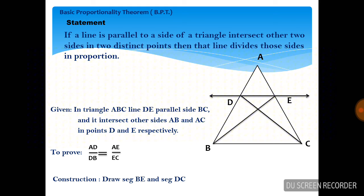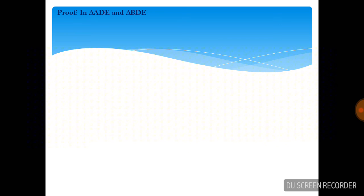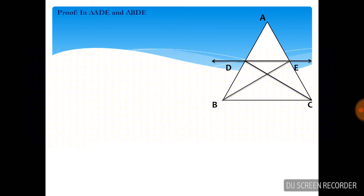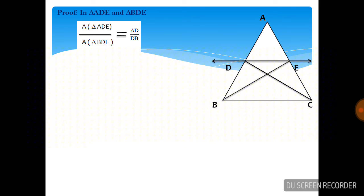Now the proof. Consider two triangles — triangle ADE and triangle BDE. These two triangles have their bases AD and DB lying on the same line, and they have vertex E opposite to their bases, meaning their heights are equal. If two triangles have the same height, the ratio of their areas equals the ratio of their corresponding bases. We use the first property here.